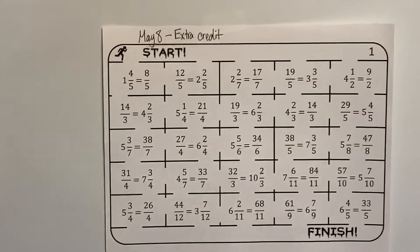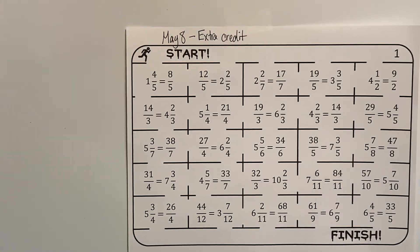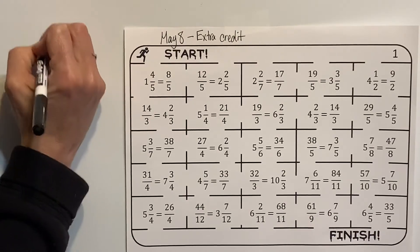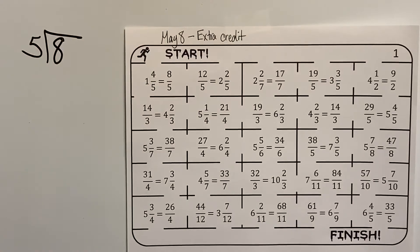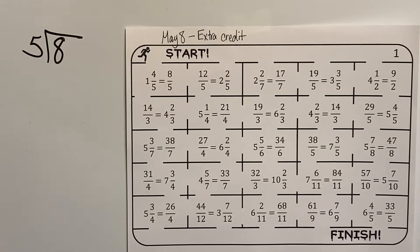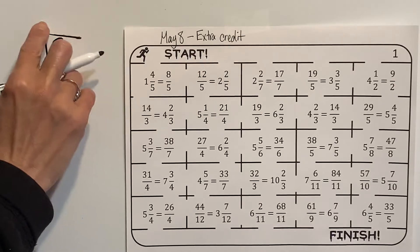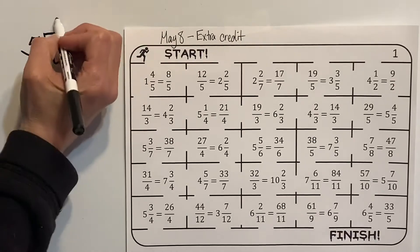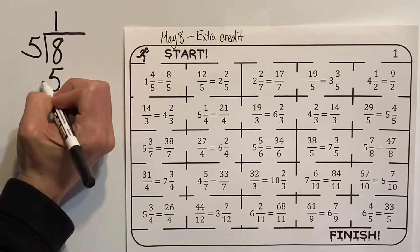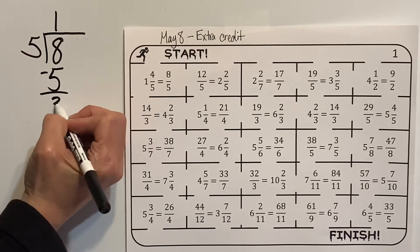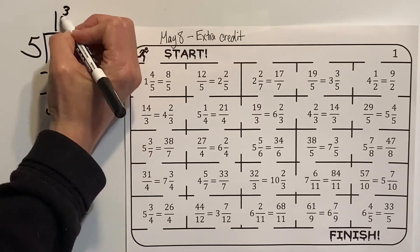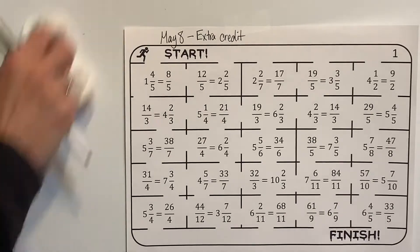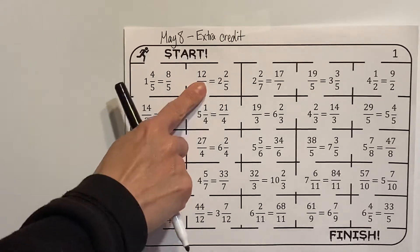All right, so 8/5 would be the same as 8 divided by 5, and we would count by fives - 5, 10 - but we can't do 10, so we can't do two fives, it's just be one five. So then we have 8 minus 5 is 3, so that would be 3/5. Oh, that doesn't match, so I can't color that one in.